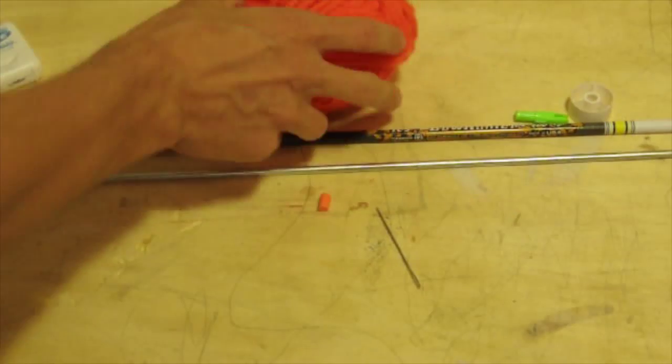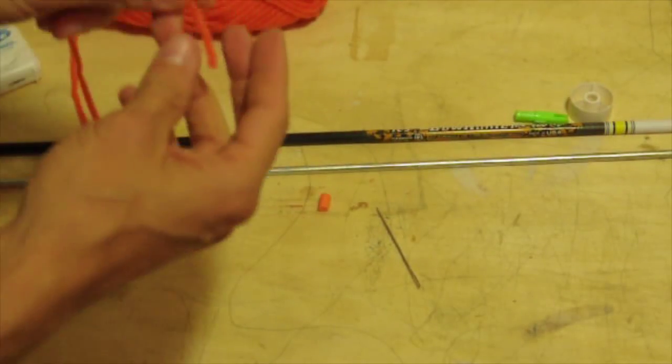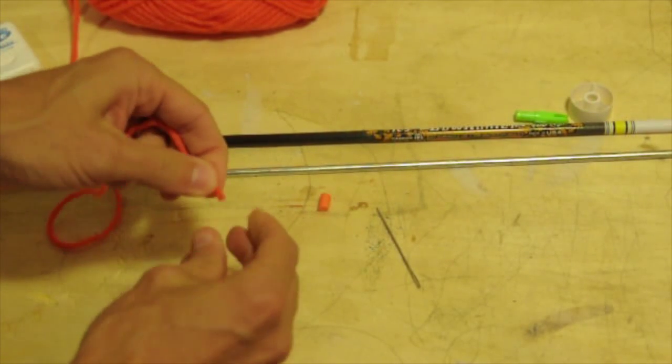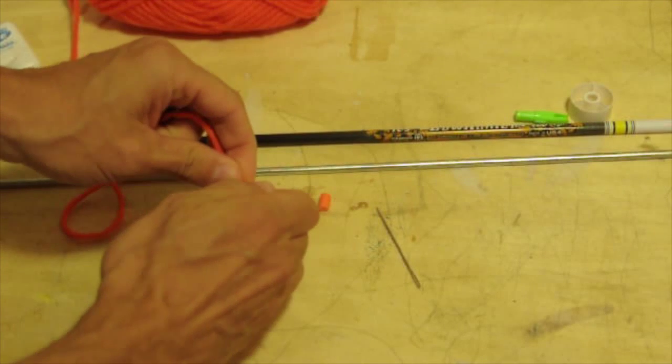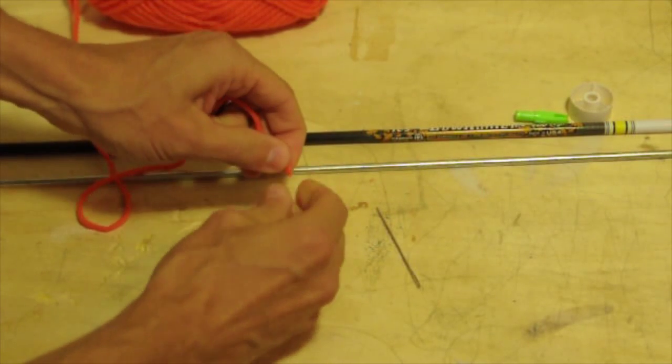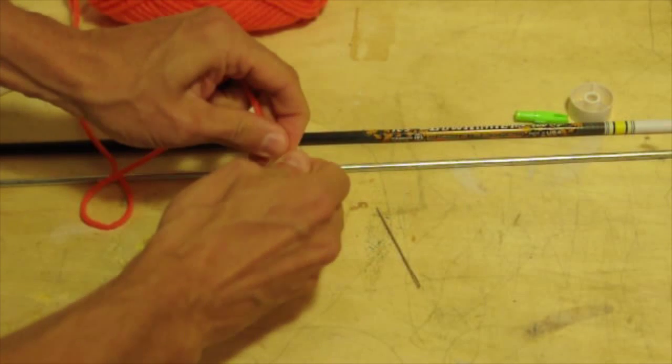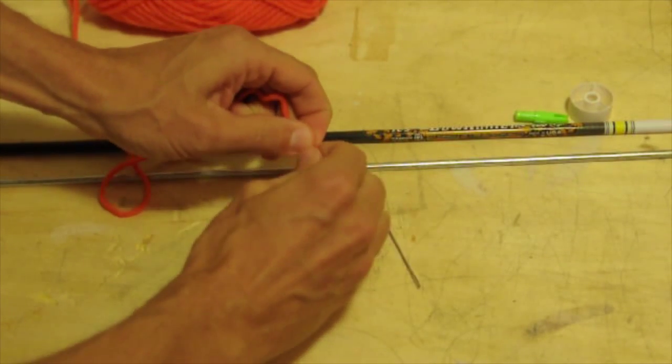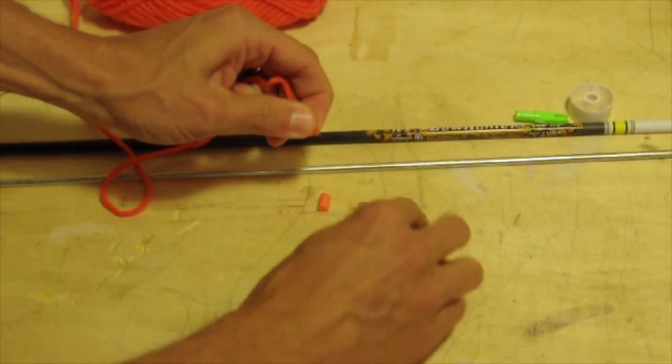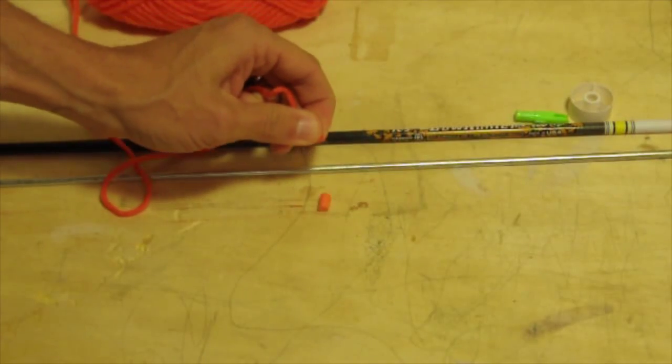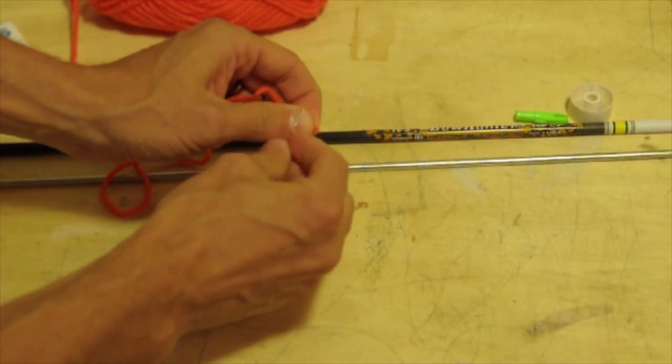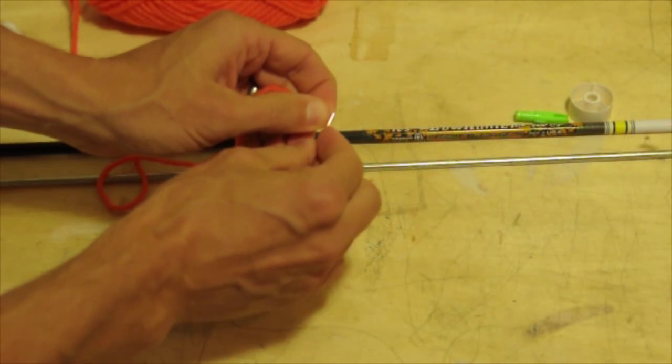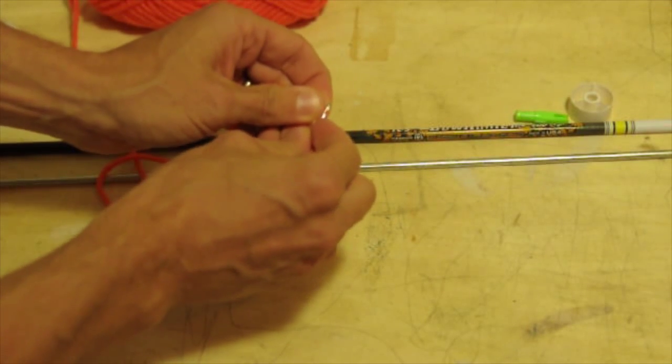The next step, once you have that, is to thread your needle. This is a little bit difficult, but the best thing I've found to do is to twist yarn as tightly as you can, hold it as close to the end as you can with your fingers.